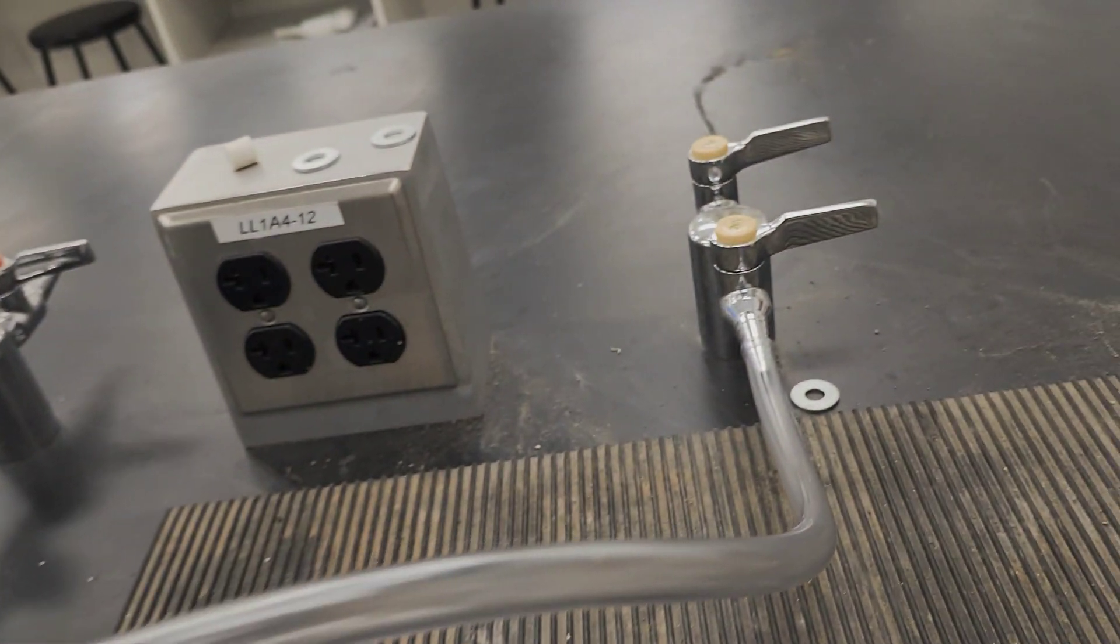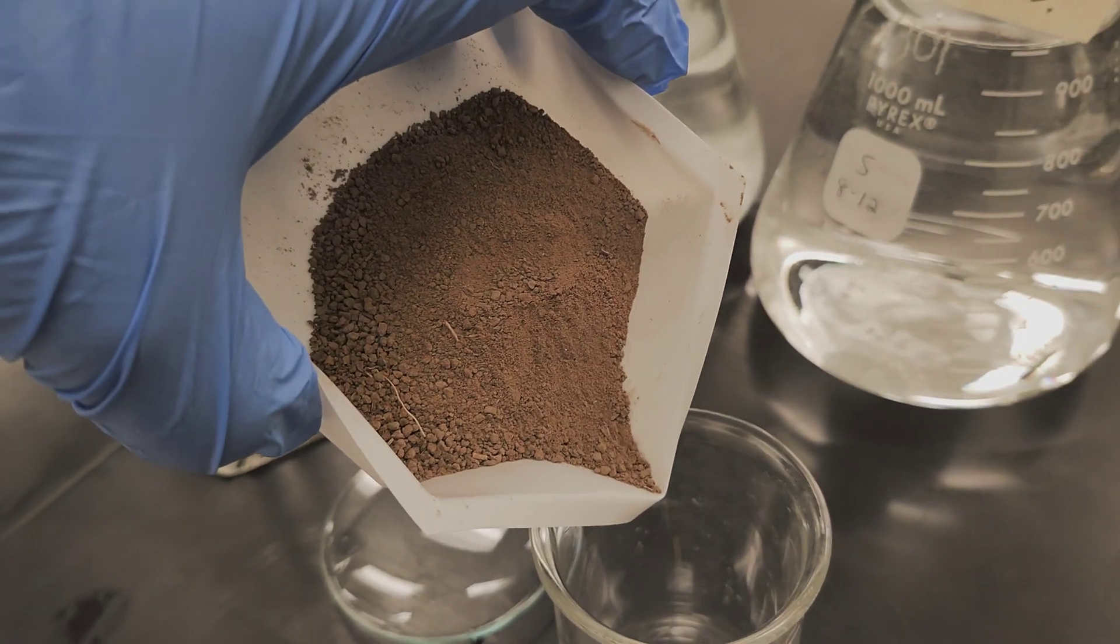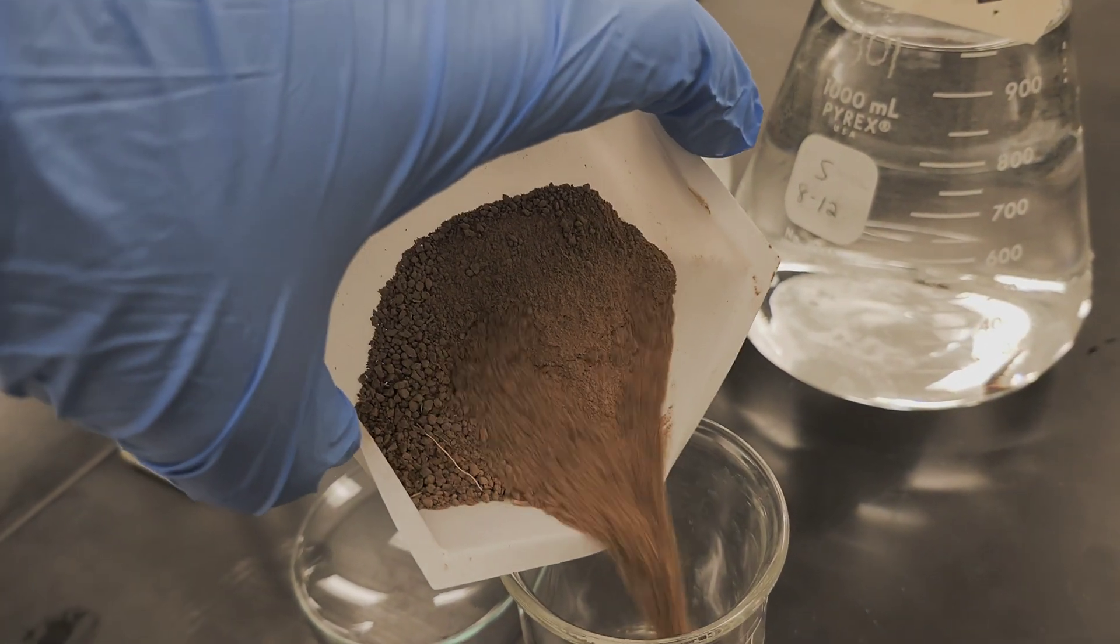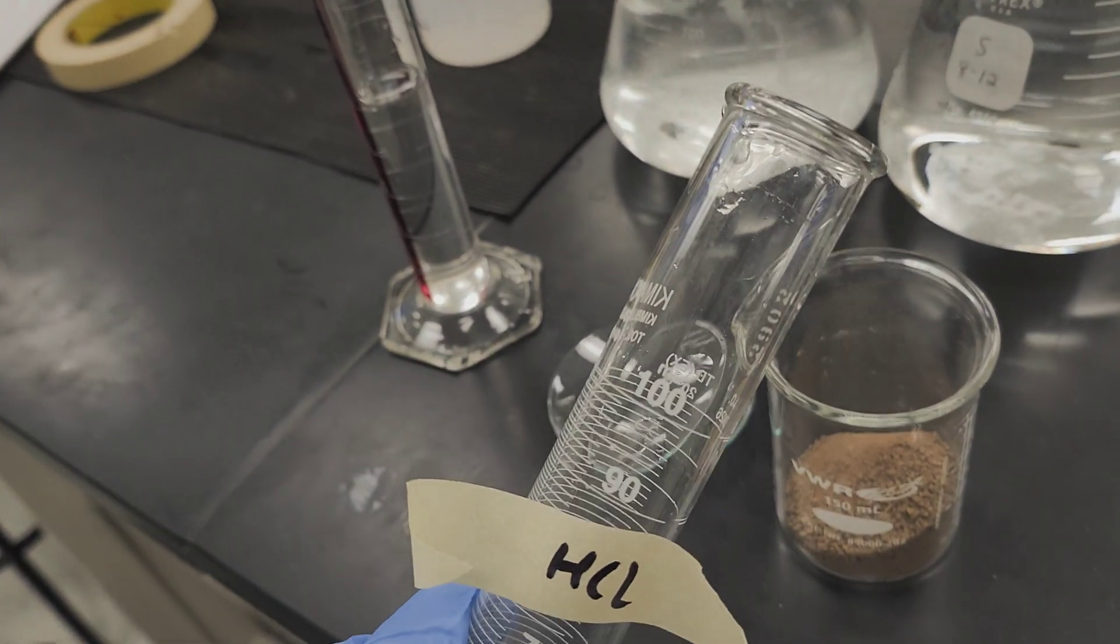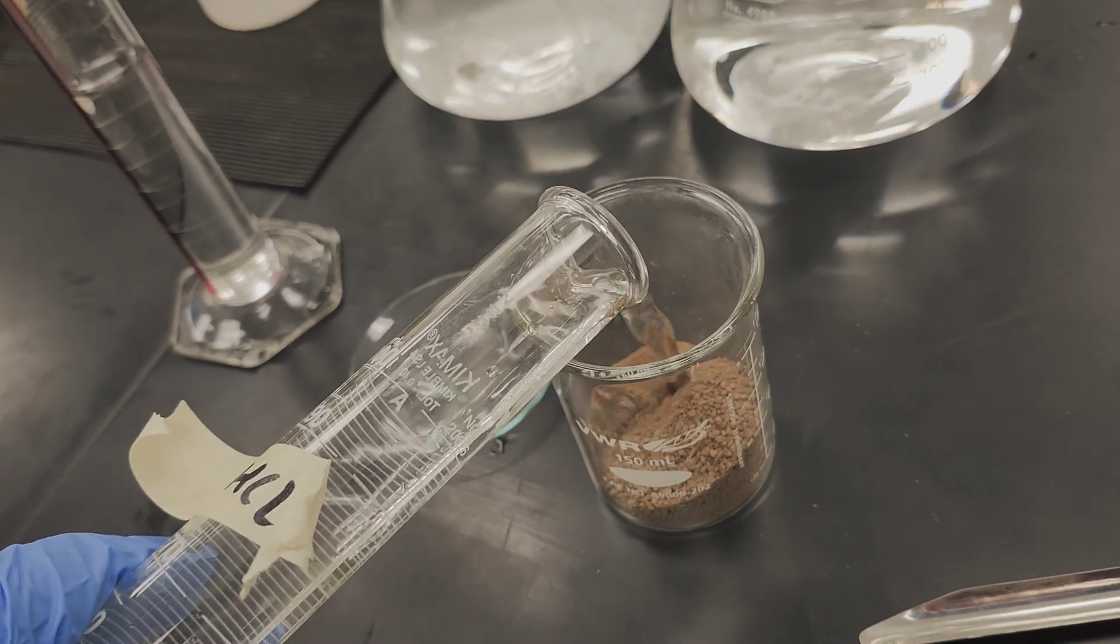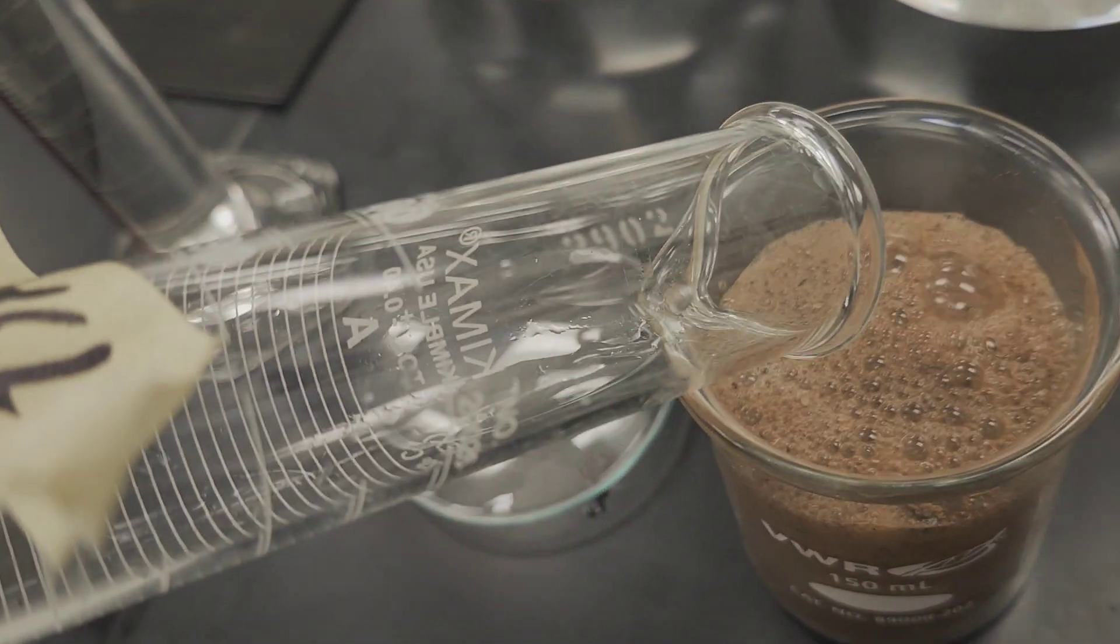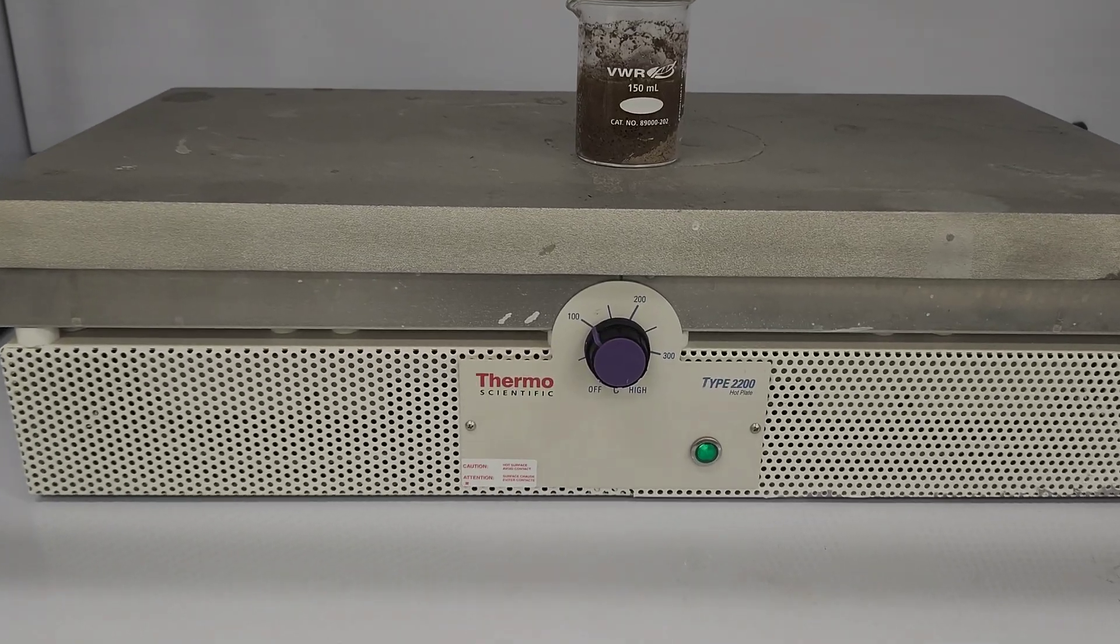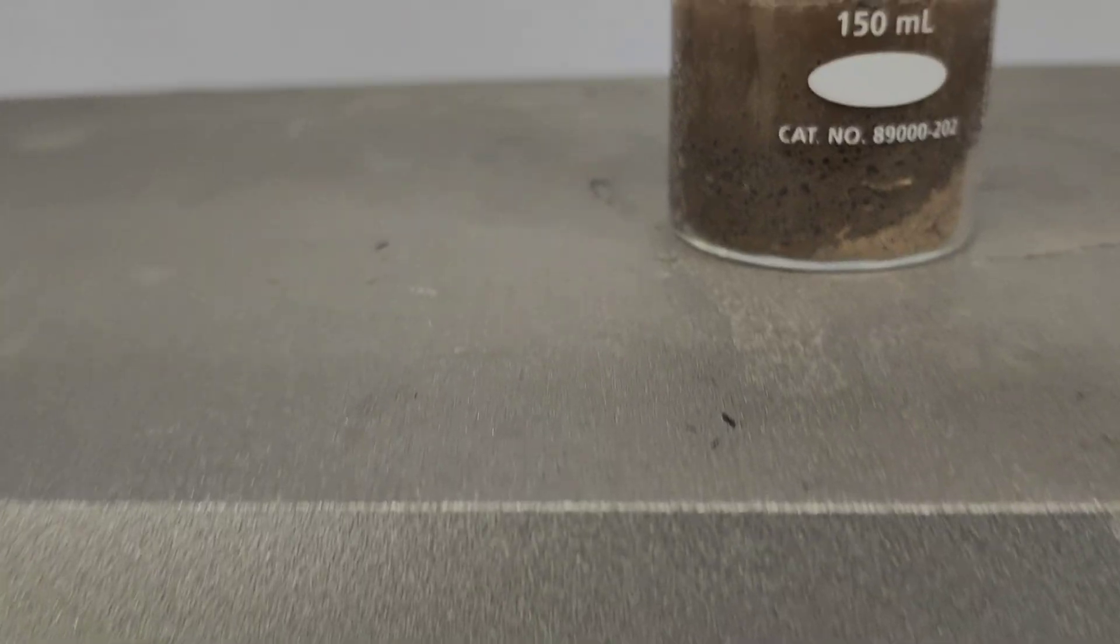First, we need to wet 10 grams of soil, then mix that soil in 50 ml of standardized 0.5 molar hydrochloric solution in a 150 ml beaker. Then we need to boil the soil on the hot plate for at least five minutes.